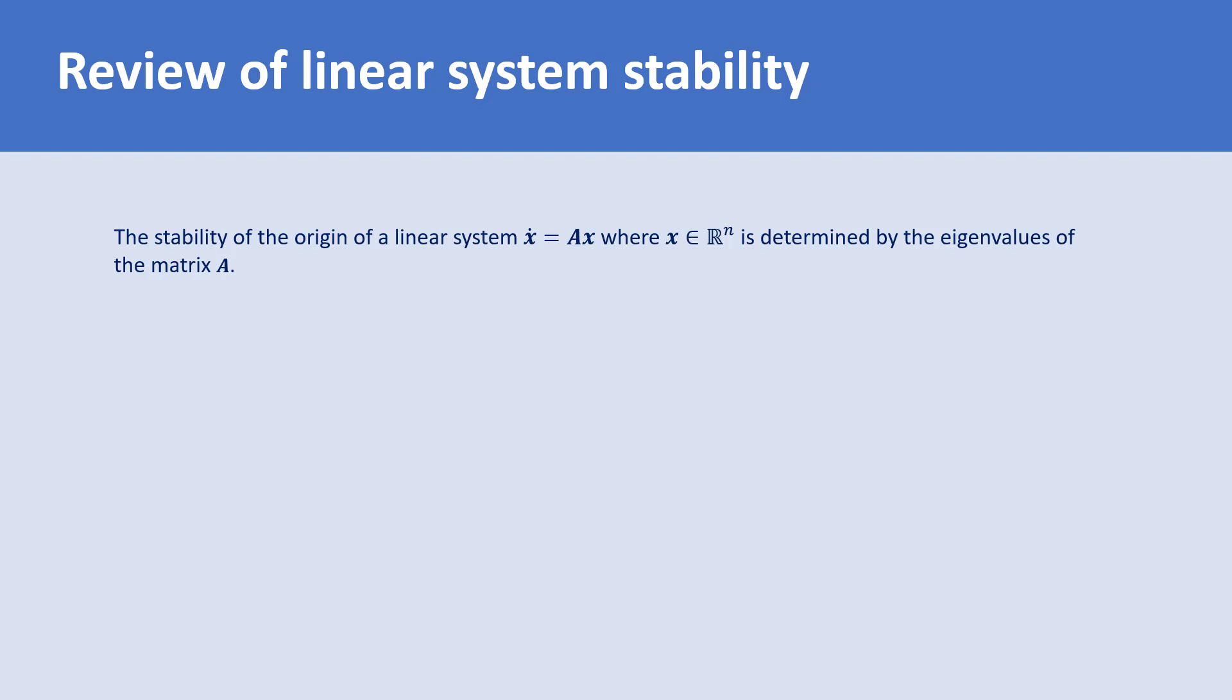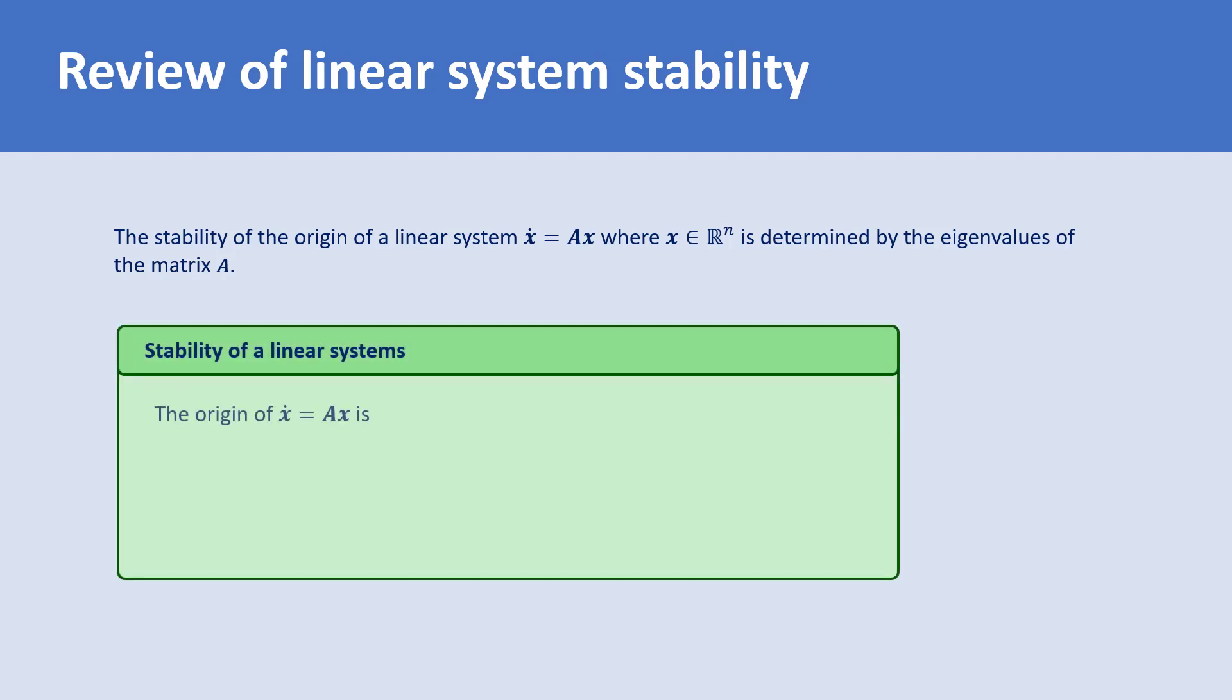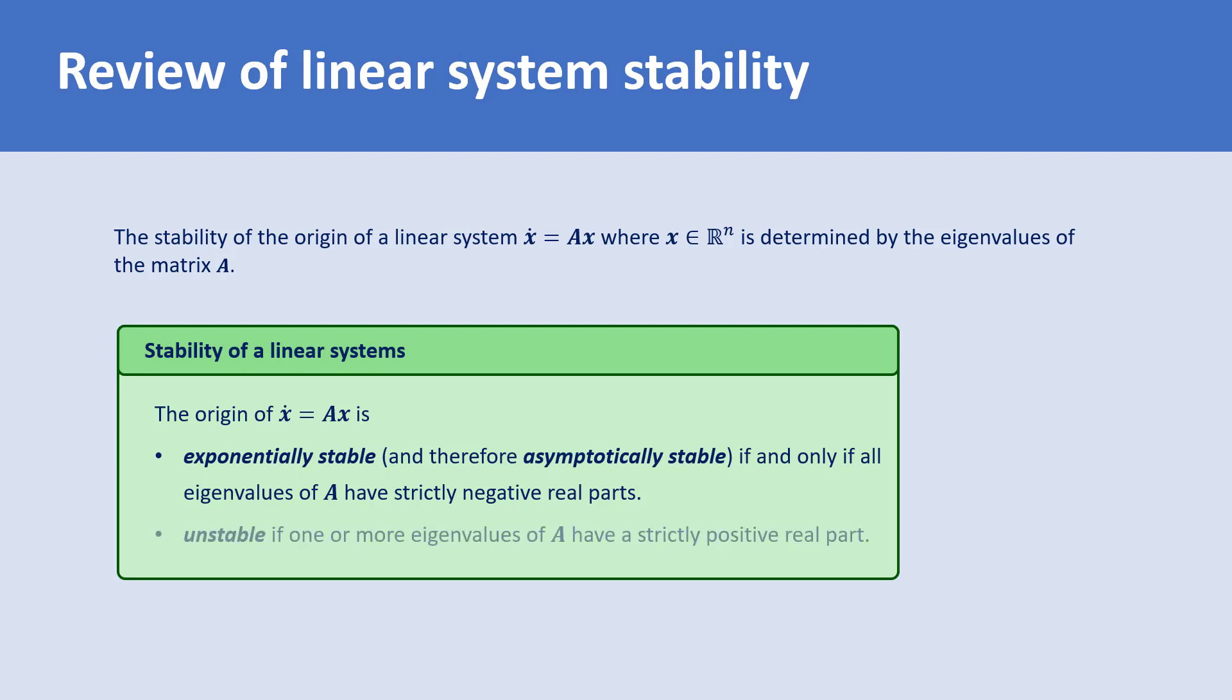The origin of x dot equals Ax is exponentially stable and therefore also asymptotically stable if and only if all eigenvalues of A have strictly negative real parts. The origin is unstable if one or more eigenvalues of A have a strictly positive real part.